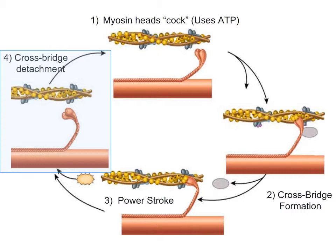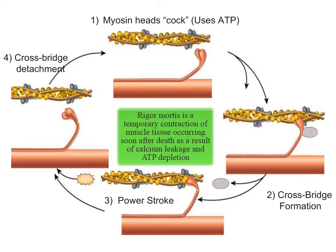To detach from actin, myosin must have a fresh ATP molecule. If we run out of ATP, myosin cannot let go of actin. Certain circumstances can cause a temporary lack of ATP, leading to muscle fatigue and spasms. Additionally, when people or other mammals die, the sarcoplasmic reticulum becomes leaky — all the calcium leaks out, initiating muscle contraction. Because the individual is dead, contraction quickly uses up all remaining ATP, and the contracting muscles cannot relax. This causes rigor mortis — the temporary stiffening of muscles that occurs soon after death.